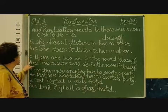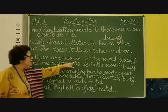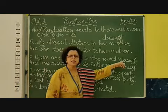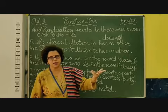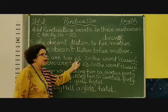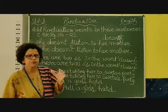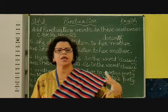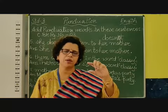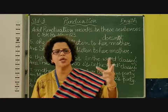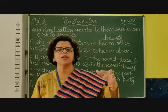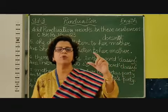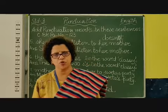Coming to the next one, number 6: there are 2 S's in the word 'classy.' If you see the word classy — C, L, A, S, S, Y — there are two S's. The rule says that when a word has repeated letters, we write them with an apostrophe before the last S. So we write 2 S's with an apostrophe before the final S.